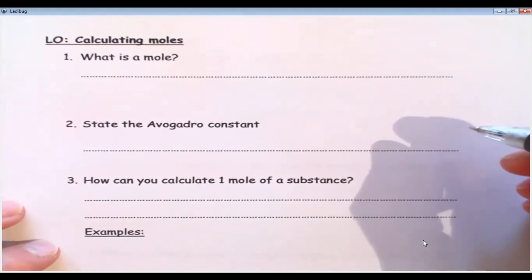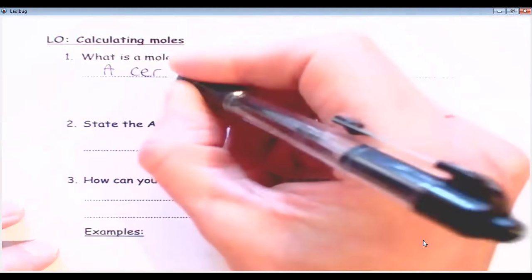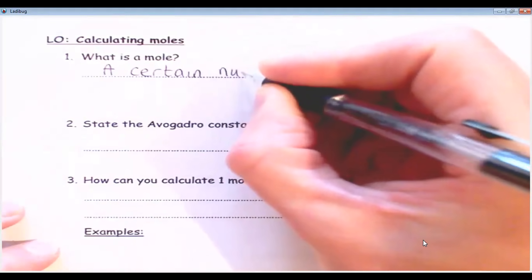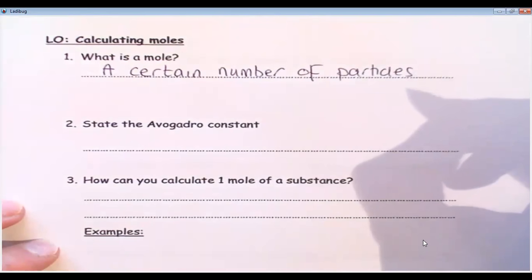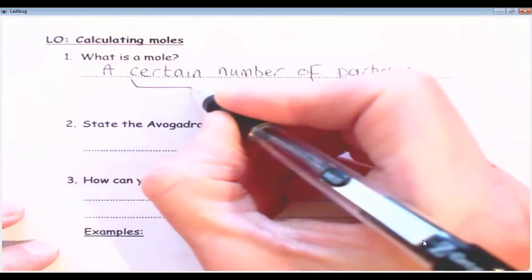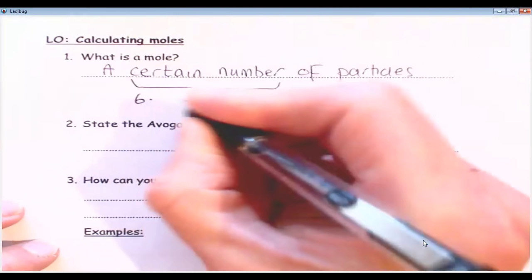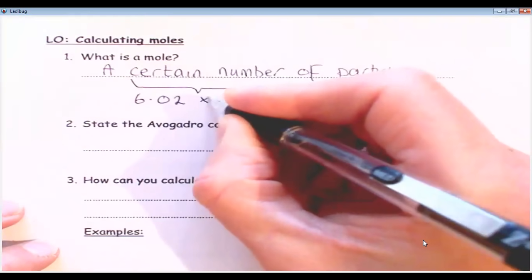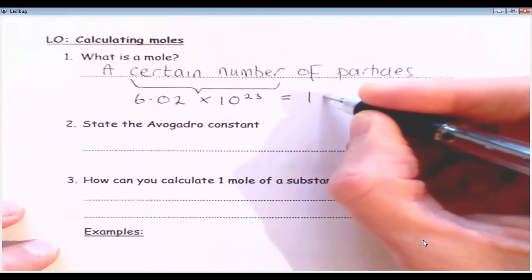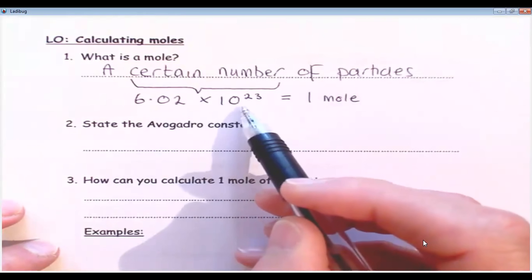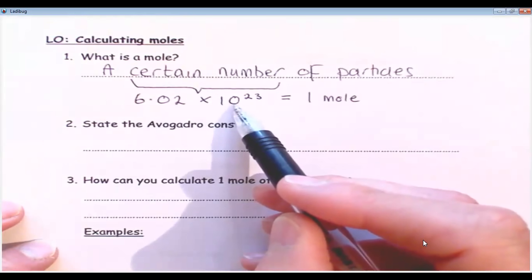The first question says: what is a mole? A mole — and I want you to write as I write — is a certain number of particles. I'm going to tell you what that number is for one mole. The number is a very big number: 6.02 times 10 to the power of 23. That equals one mole. Those of you who have forgotten about standard form, that just means 6.02 times 10, 23 times. We call that one mole.